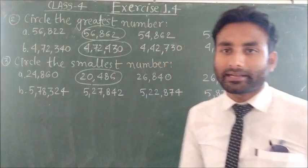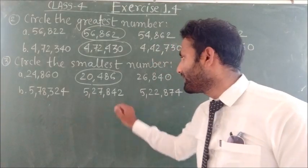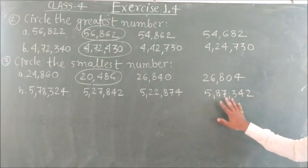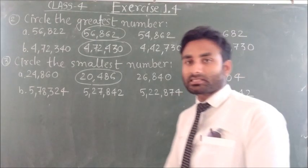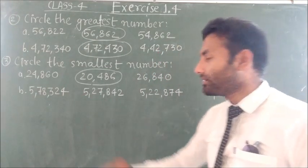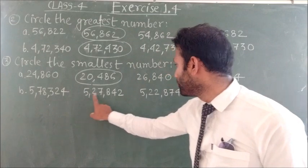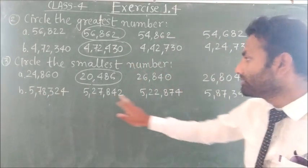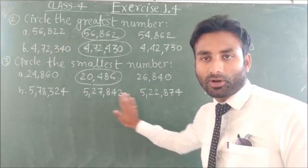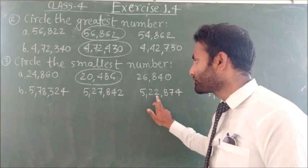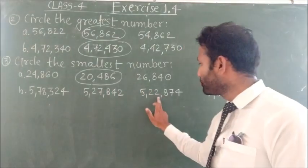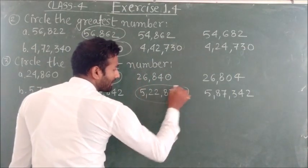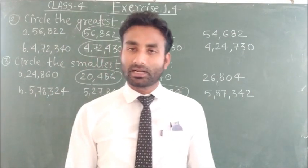Next: 5,78,324, 5,27,842, 5,22,874, and 5,87,342. Which is the smallest number? Five is common, so we look at the next digits: 7, 2, 2, and 8. The smallest is 2, so 5,22,874 is the smallest number.